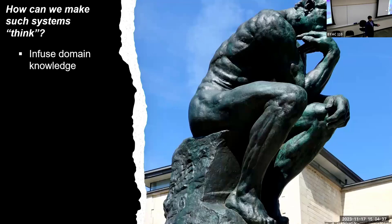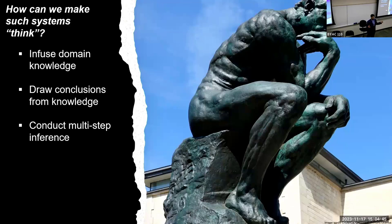Can we take a machine learning system like ChatGPT? Can we infuse domain knowledge? Can we allow it to draw conclusions from that knowledge? And can we allow it to do multi-step inference? There is a large wealth of work on symbolic reasoning. But the thing is, symbolic reasoning tends to take place using discrete objects, discrete mathematics, whereas neural networks and machine learning is largely continuous. So how do we get the two to meet together?